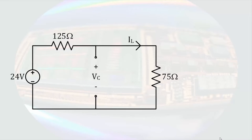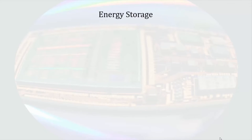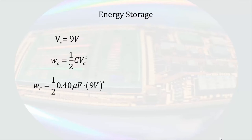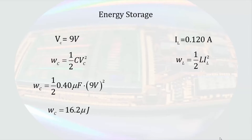The current can be determined by dividing the 24-volt source by the sum of resistors in series, resulting in an inductor current of 0.12 amps. Now that we have determined the capacitor voltage and the inductor current, we can calculate the energy stored in each component. Using the capacitor voltage of 9 volts, the energy stored in the capacitor is 16.2 microjoules. Using the inductor current of 0.12 amps, the energy stored in the inductor is 72 microjoules. We can see that circuits involving capacitors and inductors with only DC sources are relatively straightforward, as the inductors behave as short circuits and the capacitors as open circuits, generally simplifying the circuits to a very basic level.